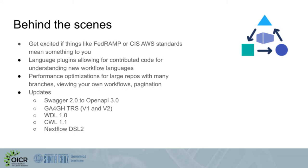Behind the scenes, things like FedRAMP and CIS AWS standards are now relevant. We've also added language plugins, allowing new workflow languages to contribute code to help us understand them — this is partly how we added Galaxy support to DocStore. We also have a lot of performance optimizations in the background for large repos with many branches, for viewing your own workflows, and for paging through workflows.